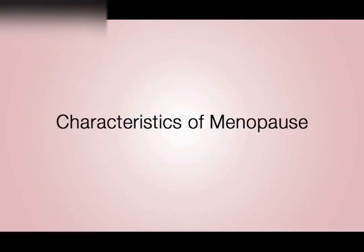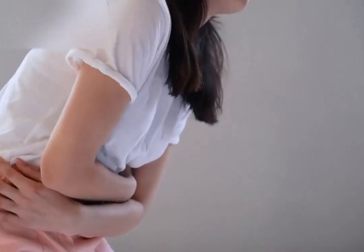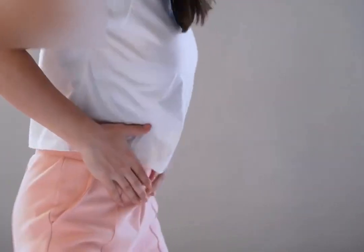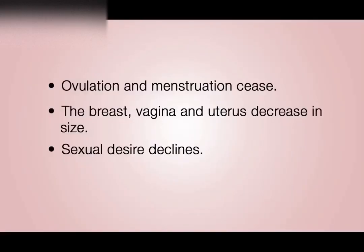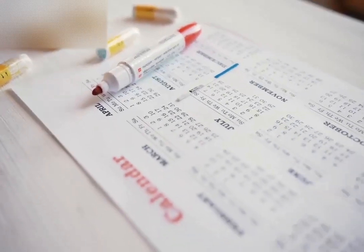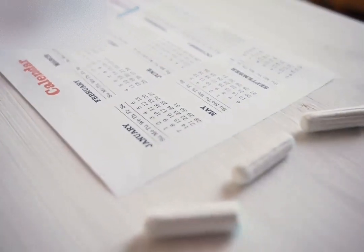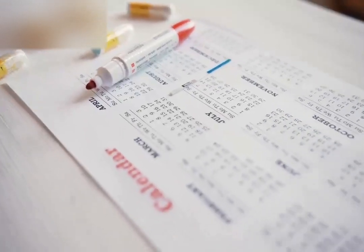Now let's look at some characteristics of menopause as a stage. Ovulation and menstruation cease. The breast, vagina, and uterus decrease in size. Sexual desire declines. The birth canal becomes dry — that is what we call vaginal dryness. These changes occur as a result of a decline in the production of sex hormones in the woman.